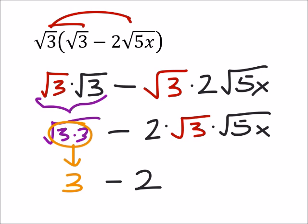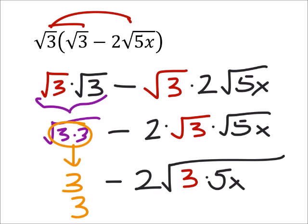and then again we can square root of all of this, 3 times the 5x. So this becomes 3 minus 2 times the square root of 15x.